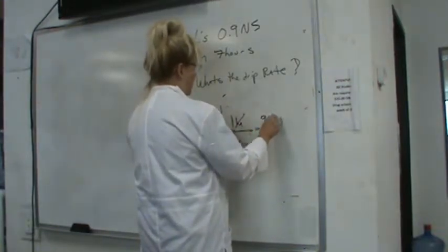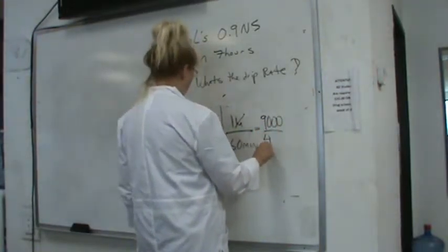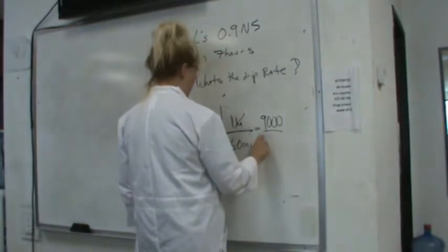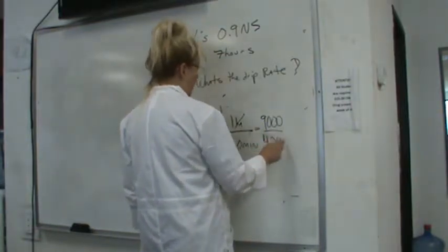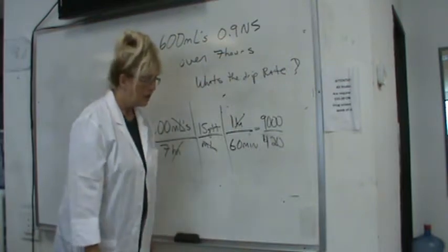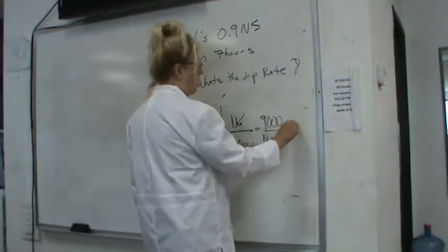9,000 over 420. Oh, 420, yeah. Equals 21.4.